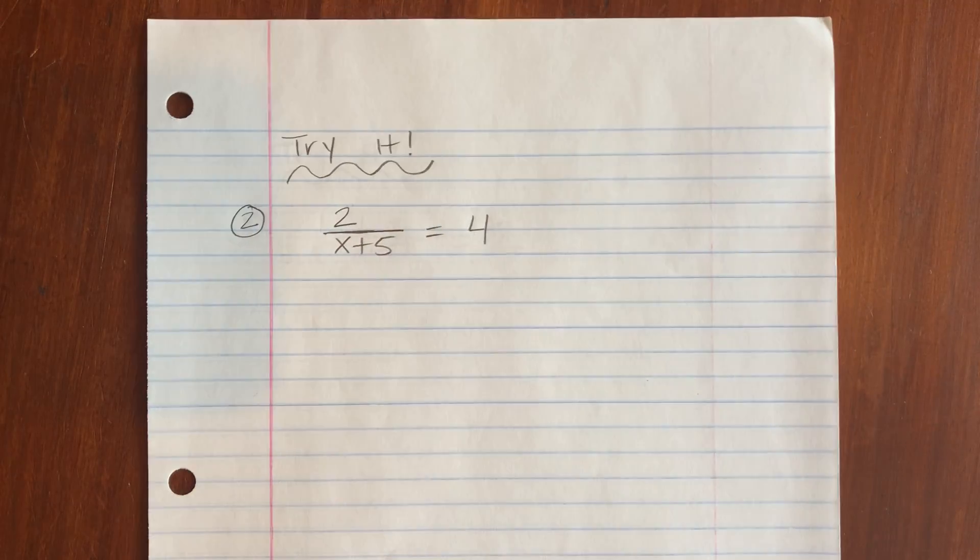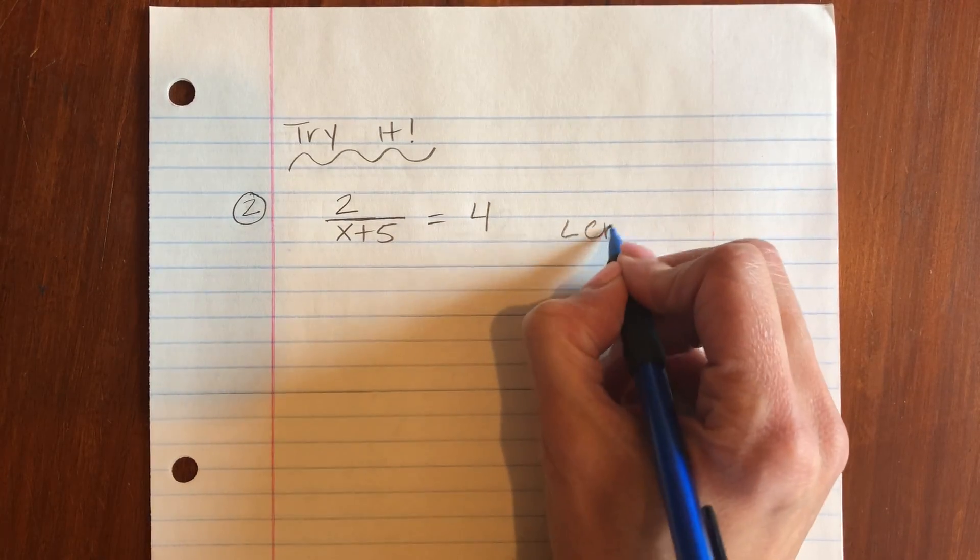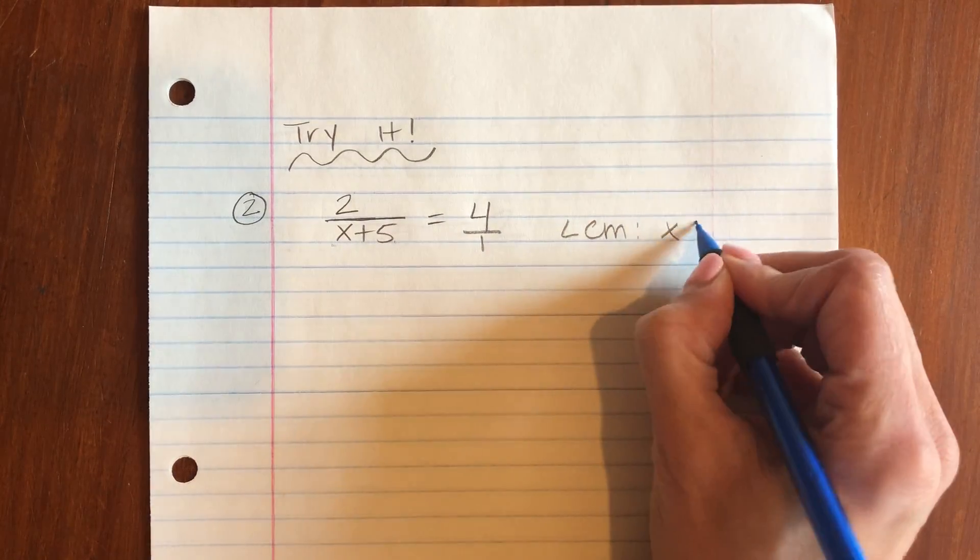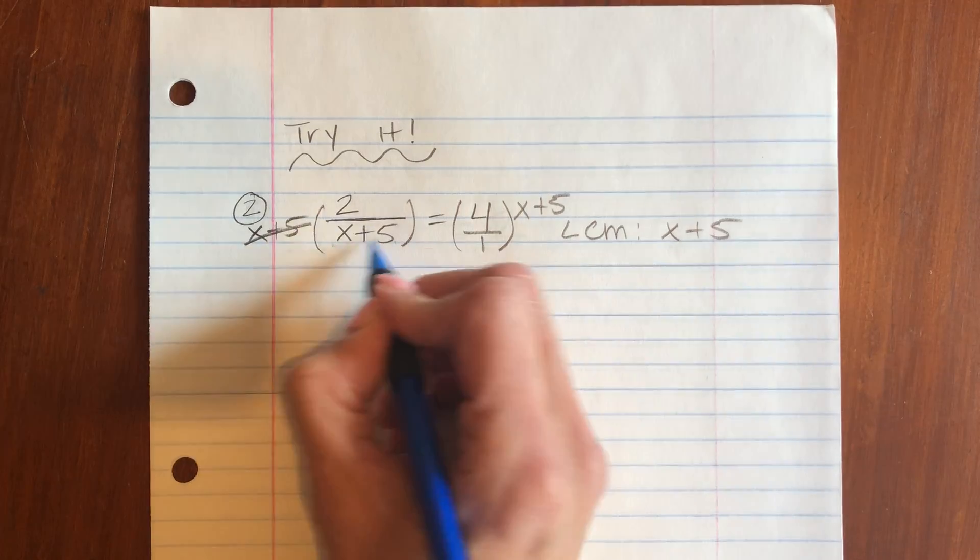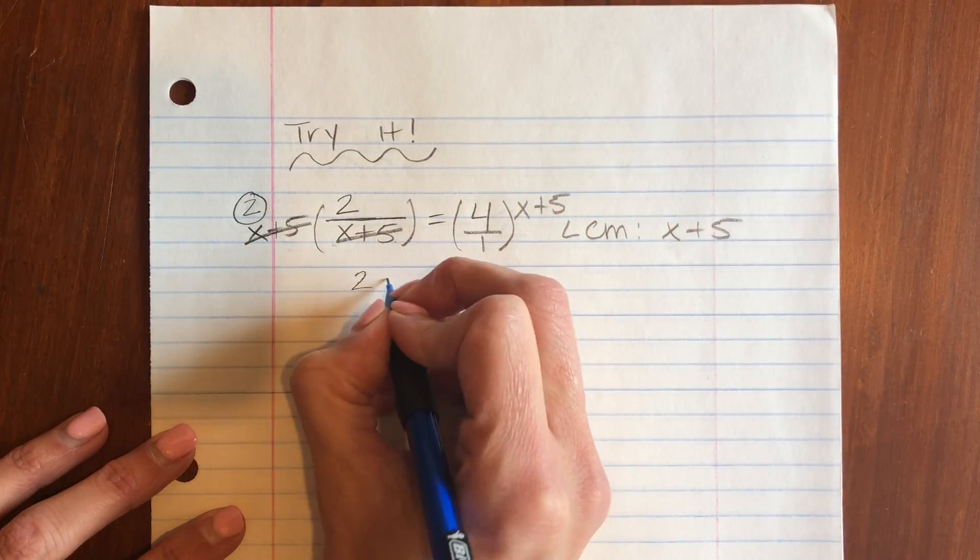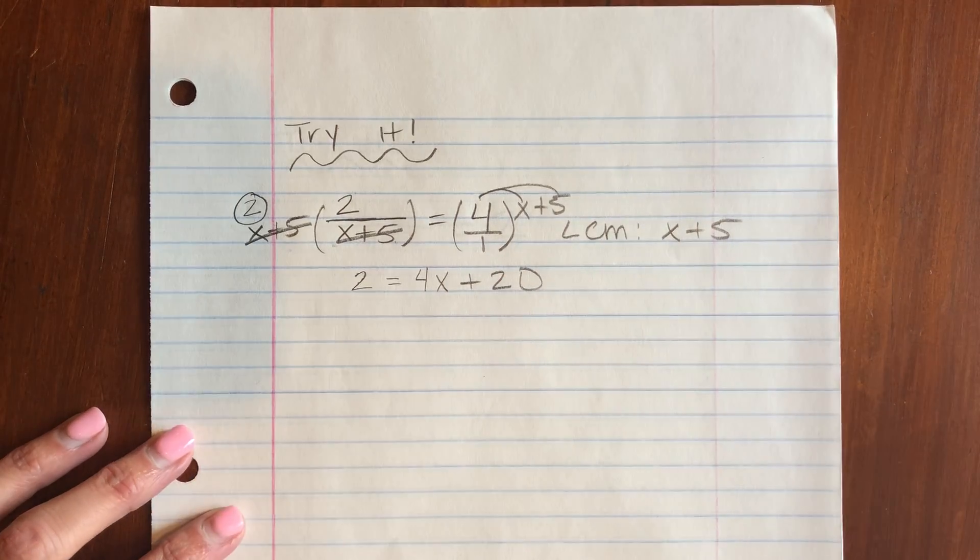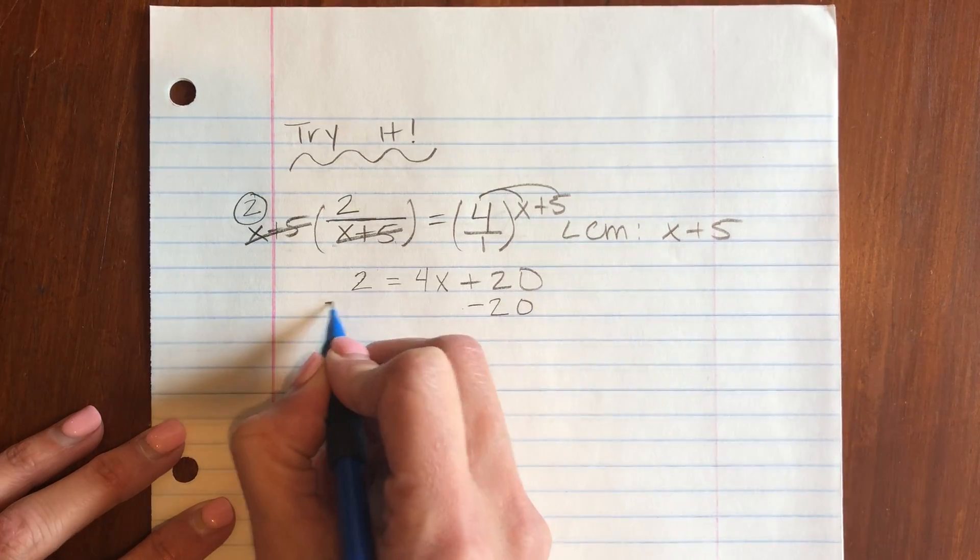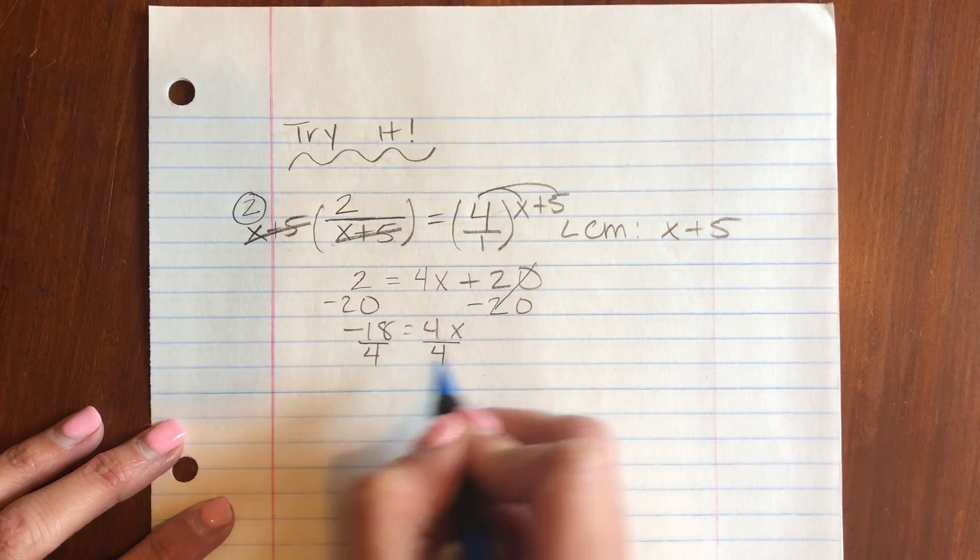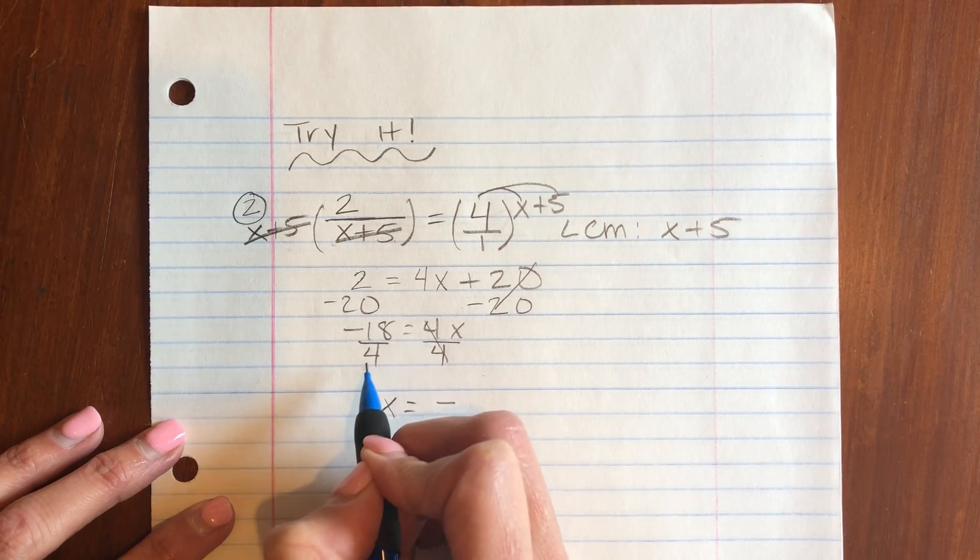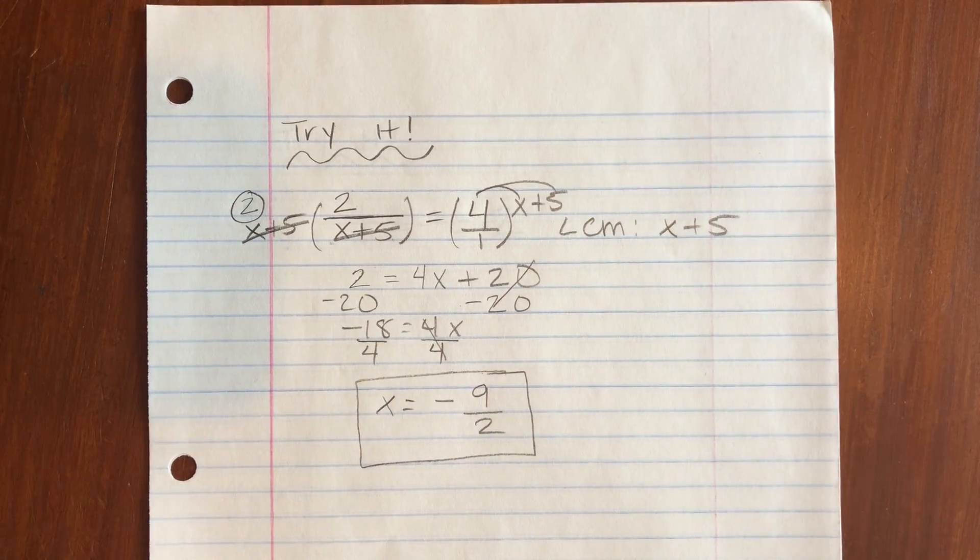Here's your next one. Try this one. LCM for this one is x plus 5. Multiply both sides by x plus 5. Those cancel out. 2 equals... distribute that 4: 4x plus 20. Then solve your two-step equation. Subtract the 20, and finally divide by 4. So x equals negative... I can reduce that by 2, so negative 9 over 2.